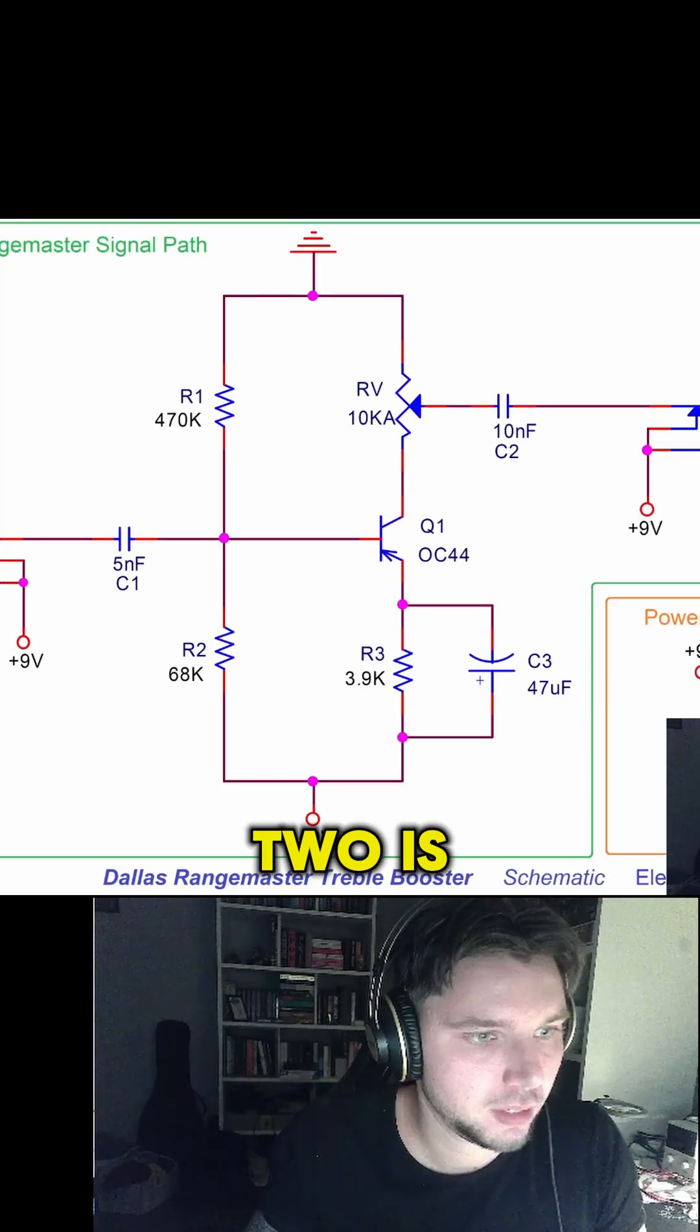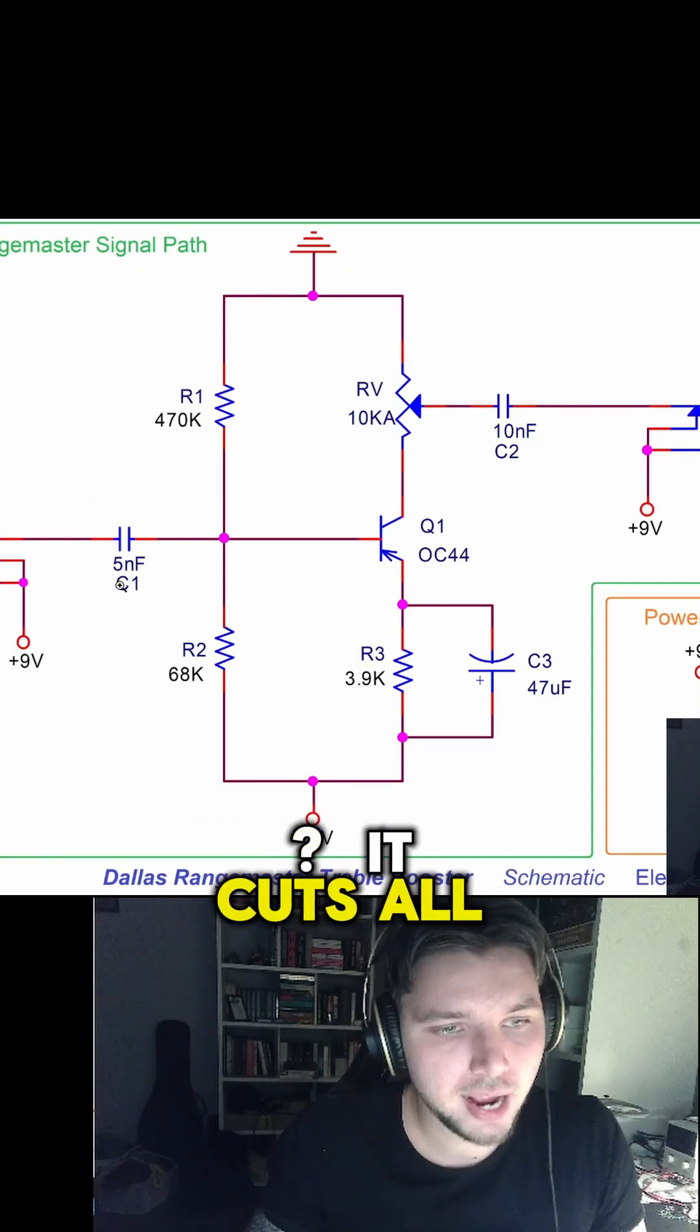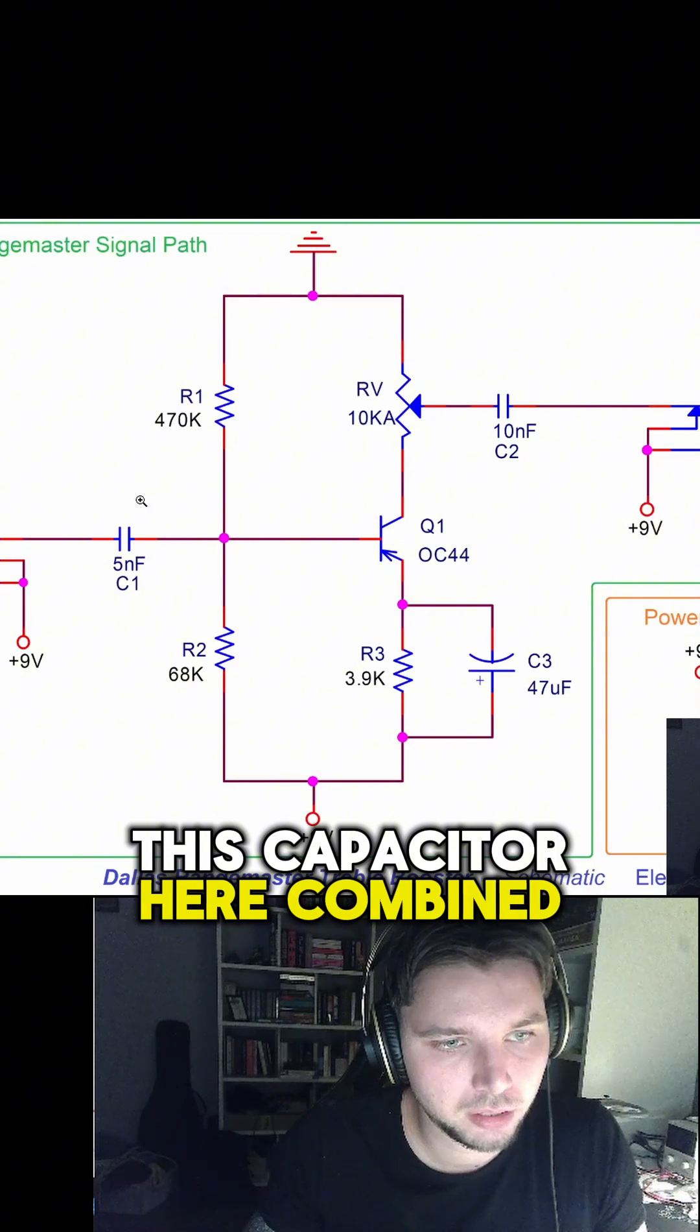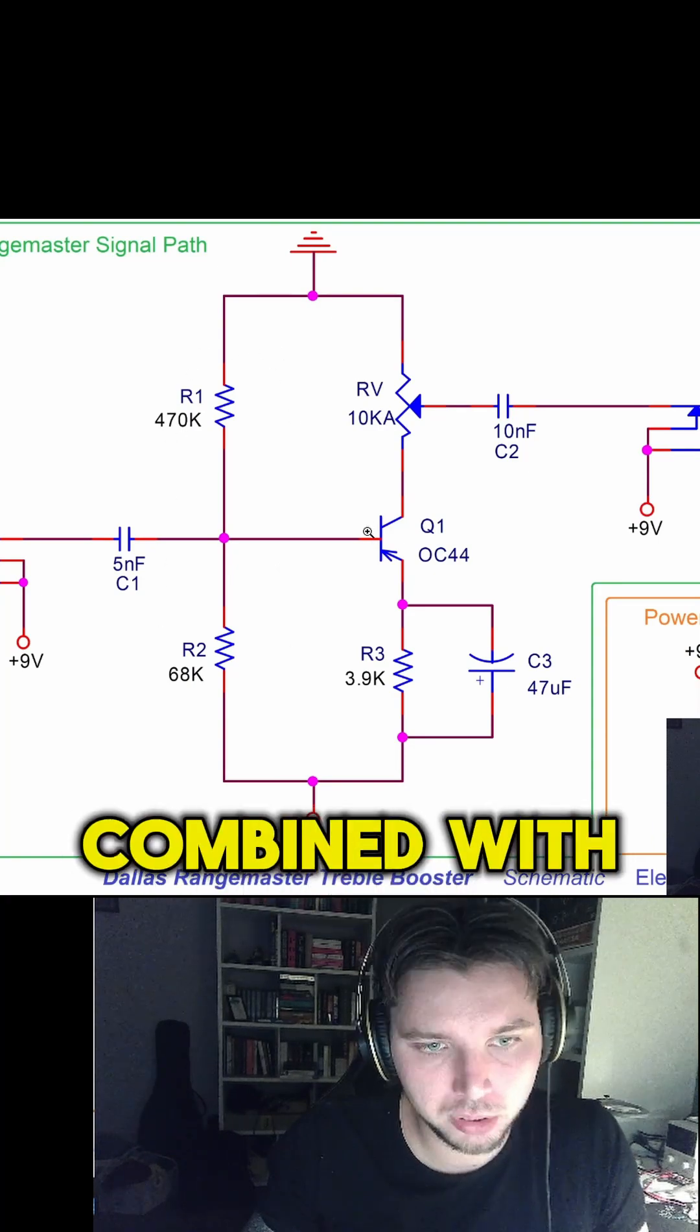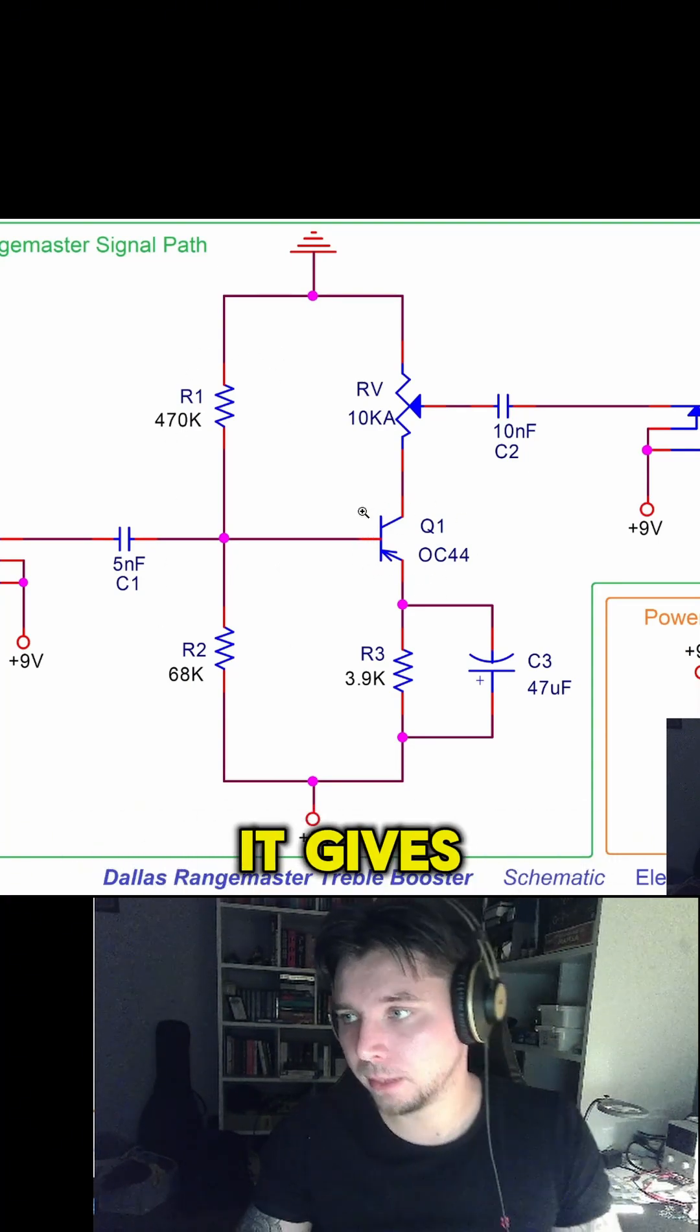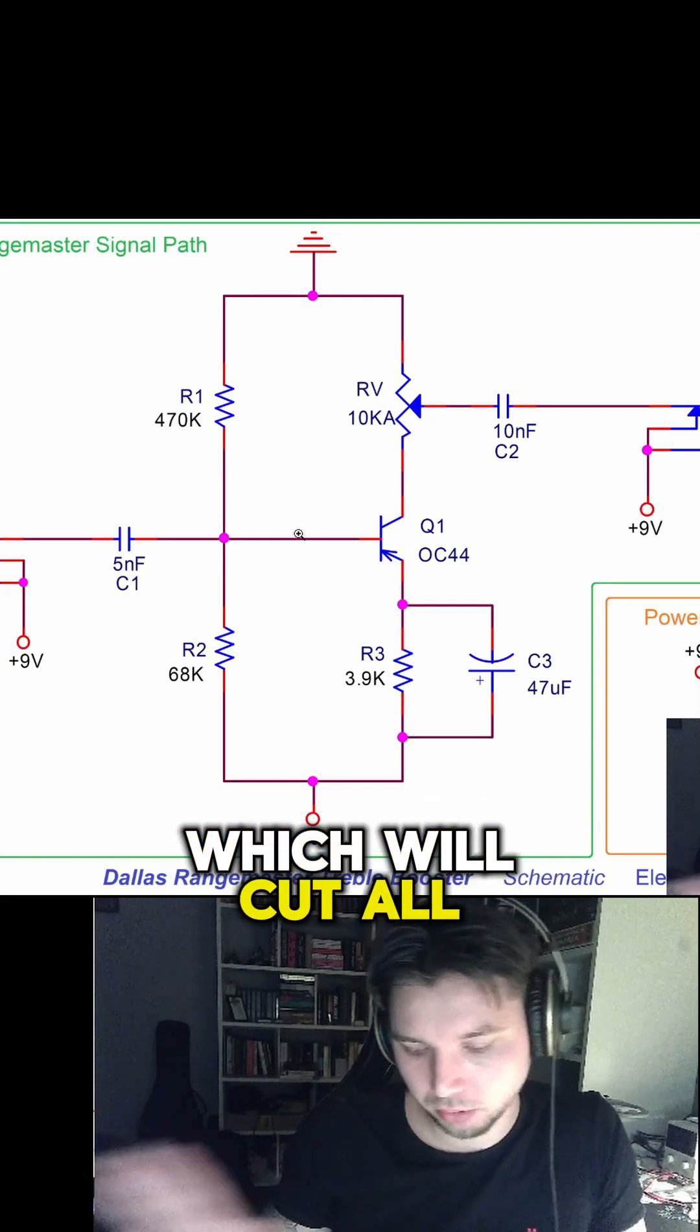The main difference between these two is this one capacitor—look, 5 nanofarads in contrast to 100 nanofarads. What does it do? It cuts all the low end from your guitar. This capacitor here combined with input impedance of this circuit, which is quite low because of this voltage divider, combined with low gain of this germanium transistor, gives quite a low input impedance. Everything combined will result with a quite strong high-pass filter which will cut all the lower end and boost everything above. This is how we do treble boosting, very simple.